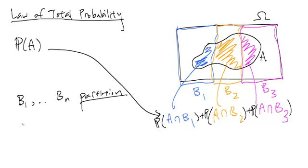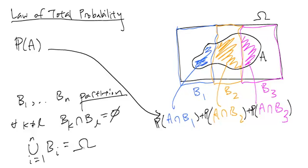So if I take any two of them, so K not equal to L, I have BK intersect BL is the empty set. They don't overlap. And the other thing is that if I take the union of all of them, the union from 1 to N of BI, then I will get the sample space omega.